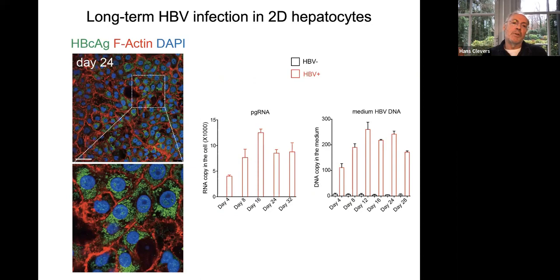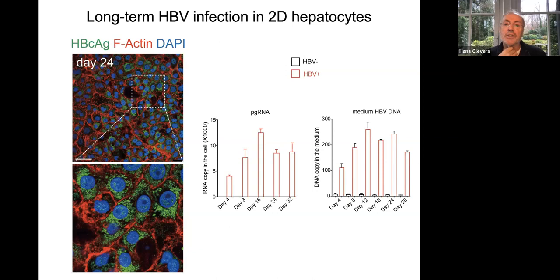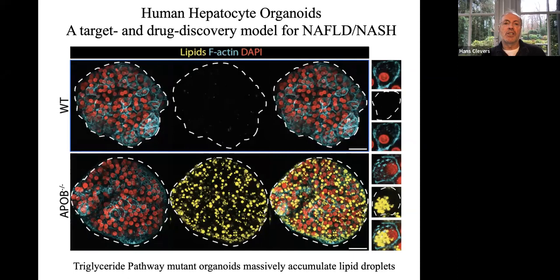One missing model in the liver field: hepatitis B virus (HBV) is a huge problem worldwide, but there are no good models to study HBV long-term — which is where treatment should be aimed, to remove latent hepatitis B from hepatocytes in patients. We grow the organoids, plate them out in 2D, remove mitogenic factors to produce mature human hepatocytes, then infect with HBV. We see the HBc core antigen from the virus abundantly expressed after about a month in culture, with integration of HBV into the host genome. We've already found host genes essential for viral expansion via CRISPR knockout.